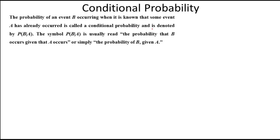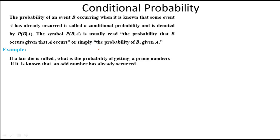In this video we will learn about conditional probability. In conditional probability, we find the probability of an event based on another event that has already occurred. We generally denote the conditional probability by the symbol P(B|A), which is usually read as the probability that B occurs given that A occurs, or simply the probability of B given A.